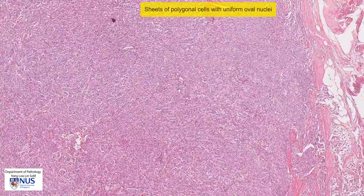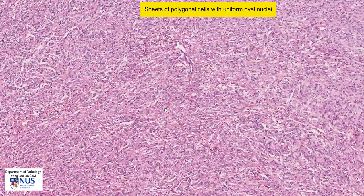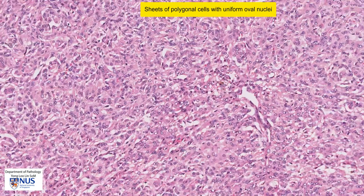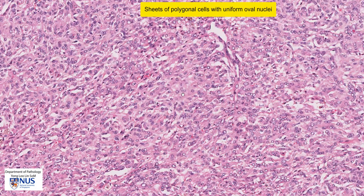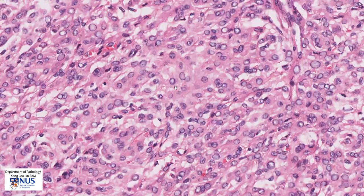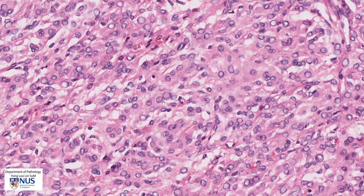The tumor itself is composed of sheets of polygonal cells with relatively uniform oval nuclei. We can see the individual nuclei that are quite similar in size and shape, and if we were to draw a line around the outline, we can see that the nuclear membranes are generally very smooth.